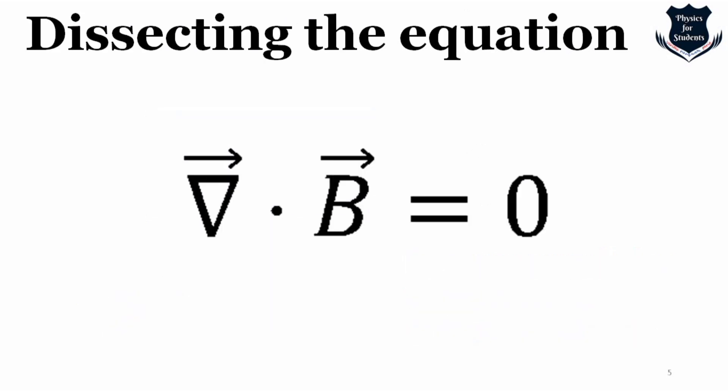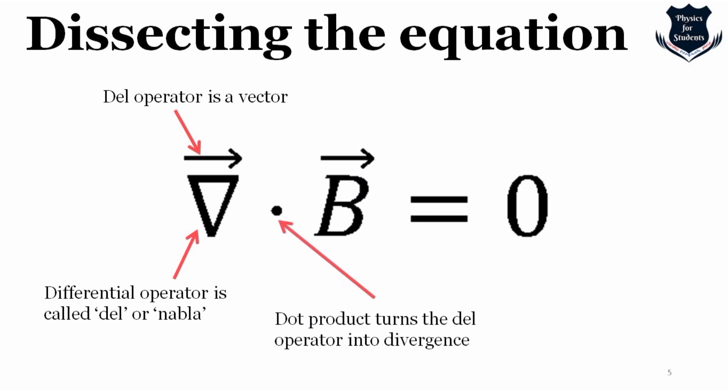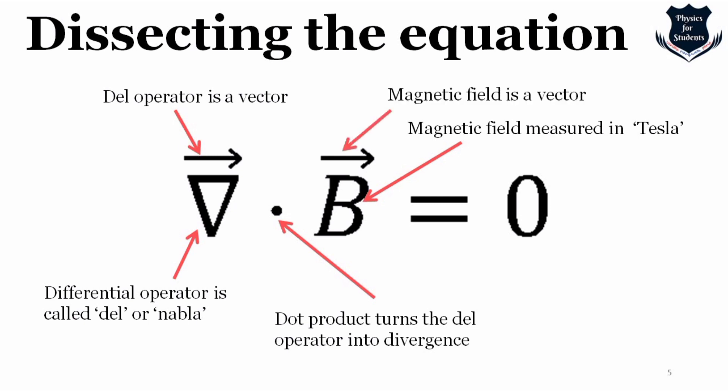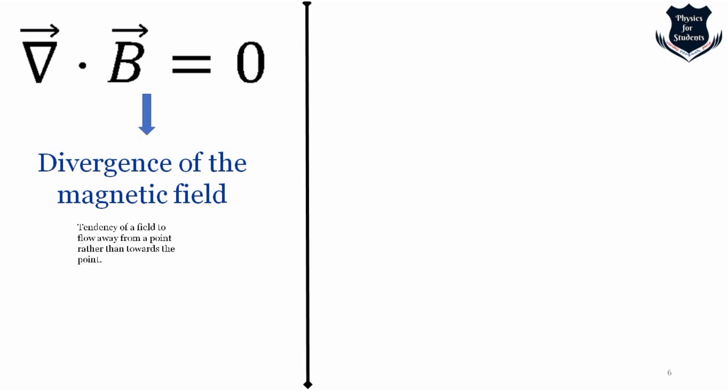Now, if we dissect the equation component by component: the del operator (shown with an arrow sign) indicates it is a vector. This is the differential del or nabla operator. The dot product turns the del operator into the divergence. B is the magnetic field, measured in Tesla, and the arrow shows that the magnetic field is a vector quantity. The entire left-hand side of the differential form of Gauss's law represents the divergence of the magnetic field.